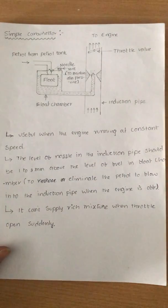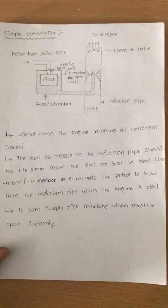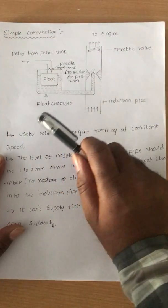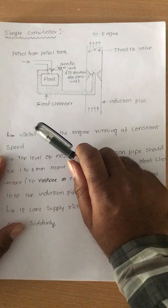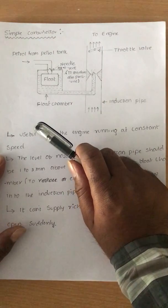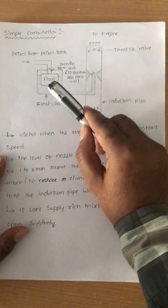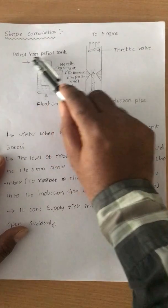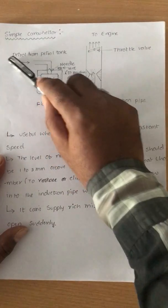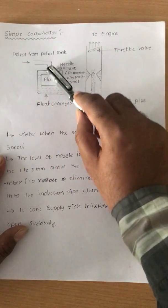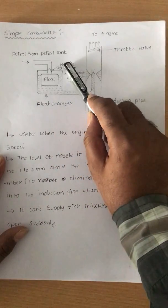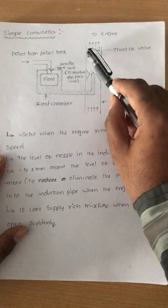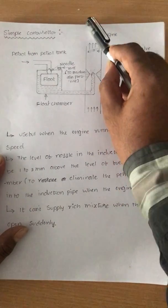This is about the simple carburetor. First, we should identify the parts involved: the float chamber and float, needle, petrol line connected to the petrol tank, vent and nozzle, induction pipe, throttle valve, and connection to the engine.